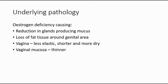The underlying pathology of atrophic vaginitis: oestrogen deficiency after menopause will cause a reduction in the glands that are producing mucus, and there will also be loss of fat tissue around the genital area.